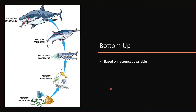The bottom-up food chain is based on resource availability. Everything starts at the bottom with the primary source of food — which could be a plant. This plant serves as our primary producer. The primary consumer eats that plant, then is eaten by a secondary consumer, a tertiary consumer, a quaternary consumer, and so on up the chain.